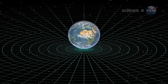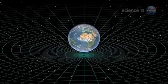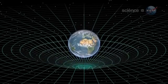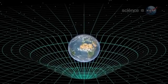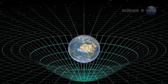Time and space, according to Einstein's theories of relativity, are woven together, forming a four-dimensional fabric called spacetime. The mass of Earth dimples this fabric, much like a person sitting in the middle of a trampoline.